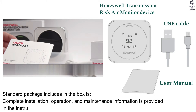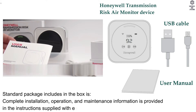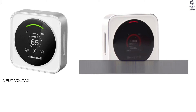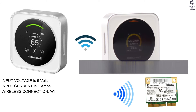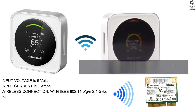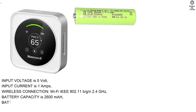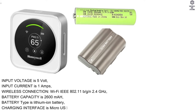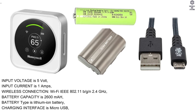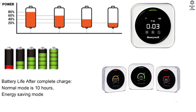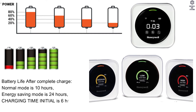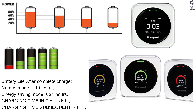Complete installation, operation, and maintenance information is provided in the instructions supplied with each product. Battery data: input voltage is 5V, input current is 1A. Wireless connection: Wi-Fi IEEE 802.11 b/g/n 2.4 GHz. Battery capacity is 2600 mAh, battery type is lithium-ion, charging interface is micro USB. Battery life after full charge: normal mode 10 hours, energy saving mode 24 hours. Charging time (initial and subsequent) is 6 hours.